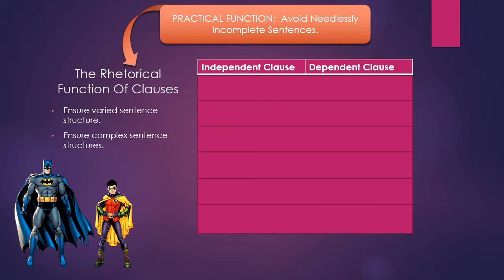A second rhetorical function is to ensure complex sentence structures — building sentences that don't all look or sound the same, that are interesting to read and listen to, and where you can add layers of meaning through the way clauses are used. Finally, there are ways to emphasize important ideas by how we construct and fit clauses together. Similar to what we discussed with syntax, the way you put clauses together allows you to bring out certain ideas and move less important ones to the background.